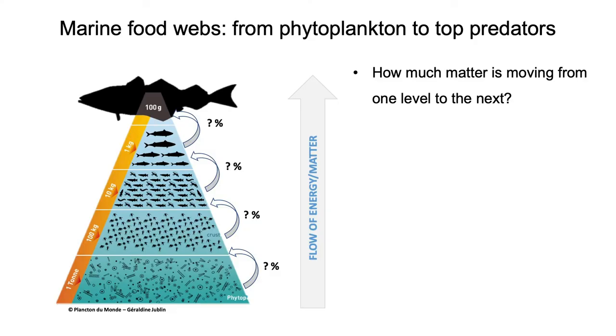Therefore, in marine ecosystems, we need a huge quantity of phytoplankton to produce a small quantity of top predators. And in my research, I want to estimate these losses in matter, in energy, in the food web.